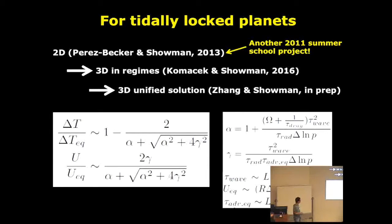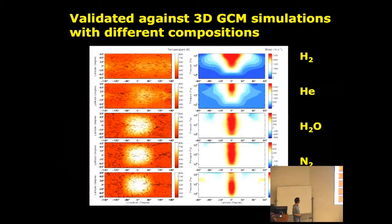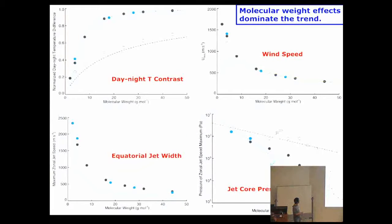You can predict the temperature difference between day side and night side and wind speed. Of course there are some assumptions, but this is very useful for people who don't want to run 3D general circulation models. We are going to test how good it is compared with different simulations. This is what it looks like. I didn't choose any parameter, but it turns out this is temperature contrast, this is wind speed, this is equatorial jet width, and this is jet core pressure. Everything actually roughly fits well. So in principle, maybe you can actually do this kind of stuff on the back of an envelope and compare with complicated 3D simulations.